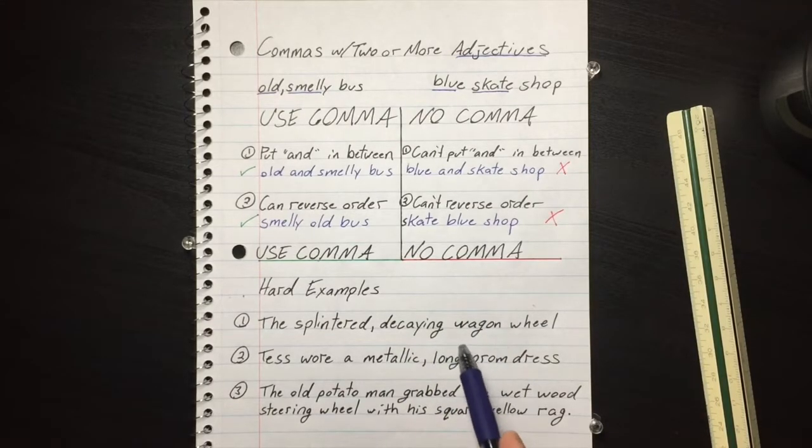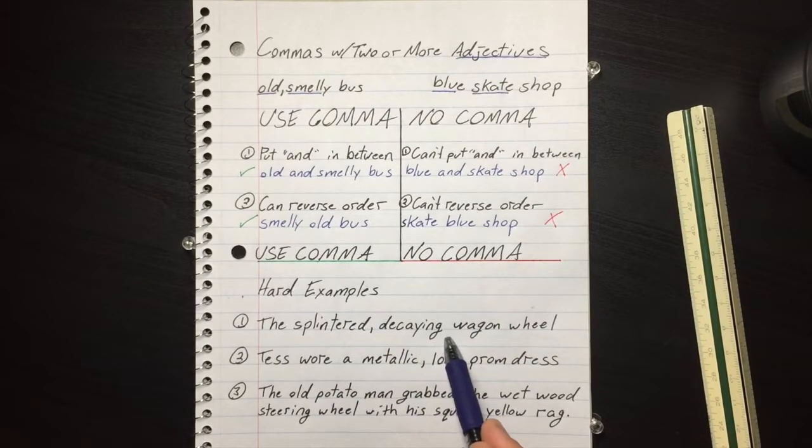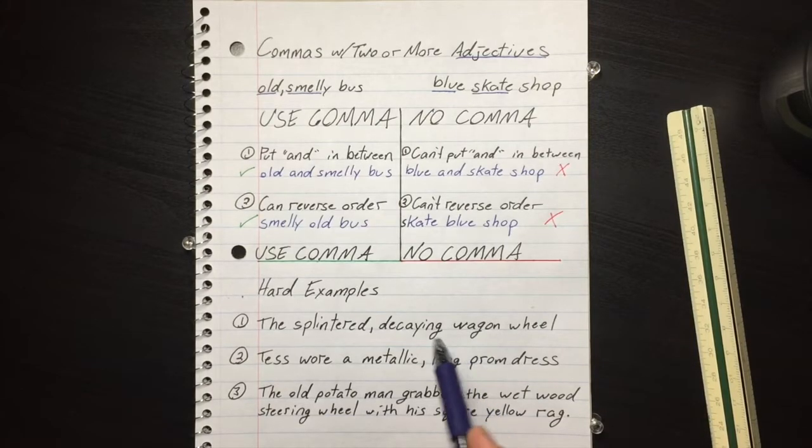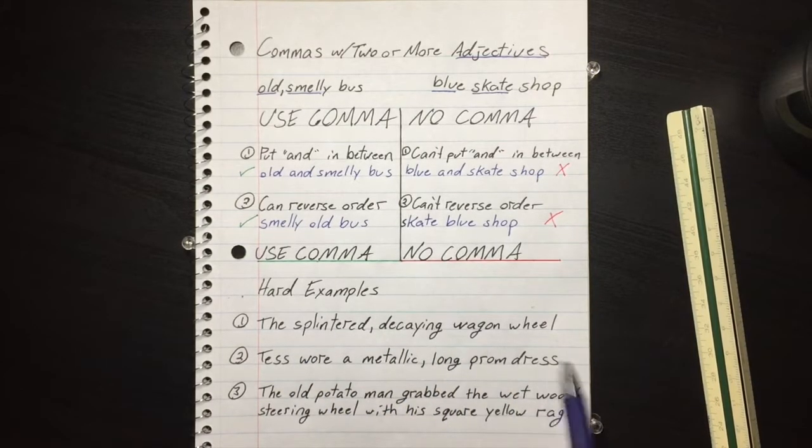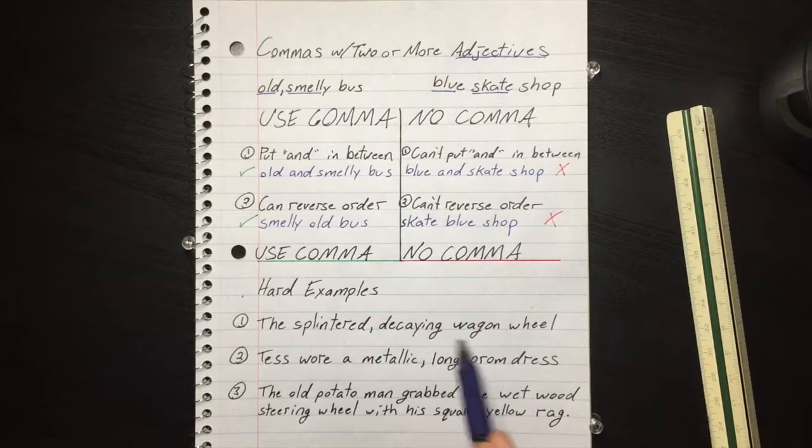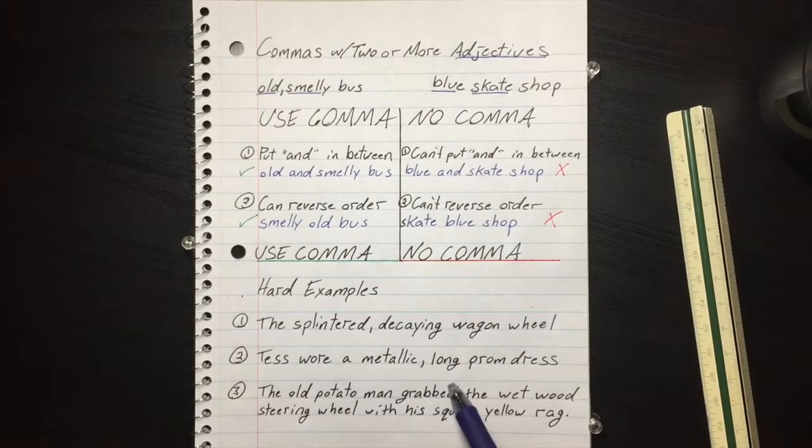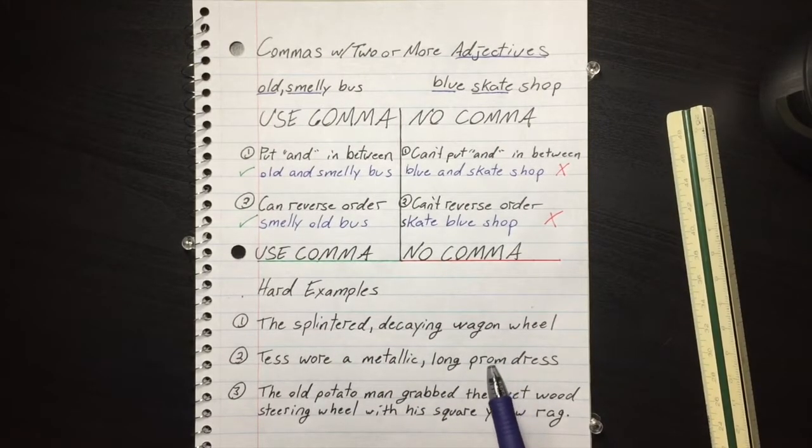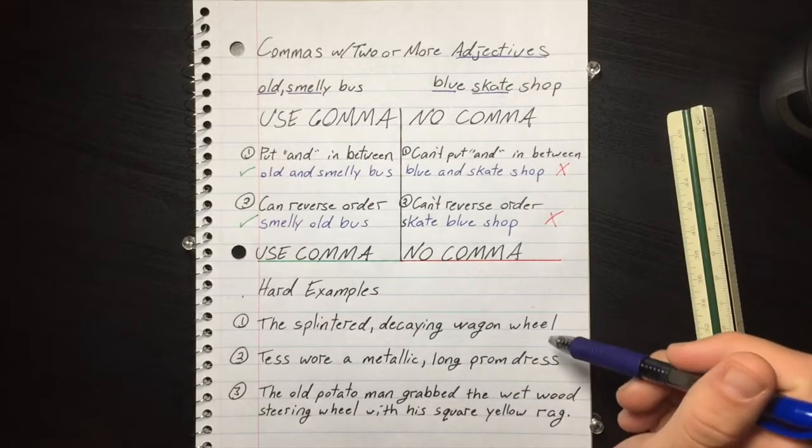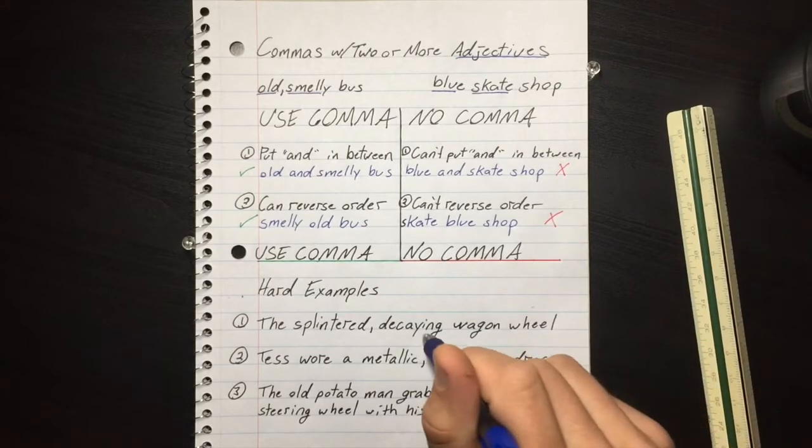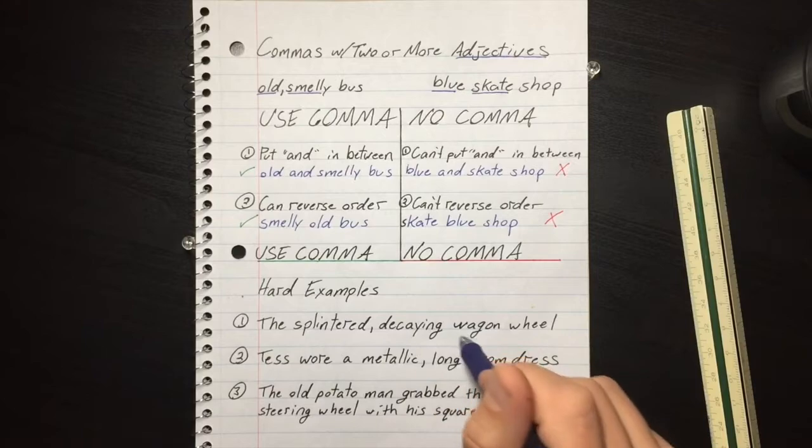Between decaying and wagon though, that does not pass the test, so there is no comma. You can't put an 'and' in between the splintered decaying and wagon wheel, and you can't change the order. The splintered wagon decaying wheel - you sound ridiculous. So that doesn't pass the test, so there is no comma in there.